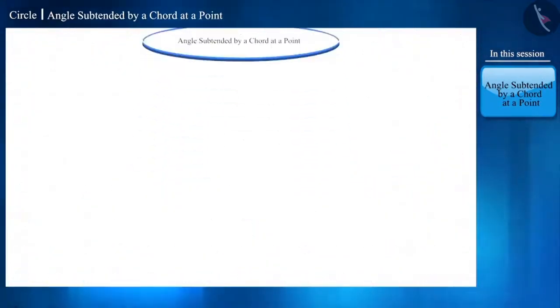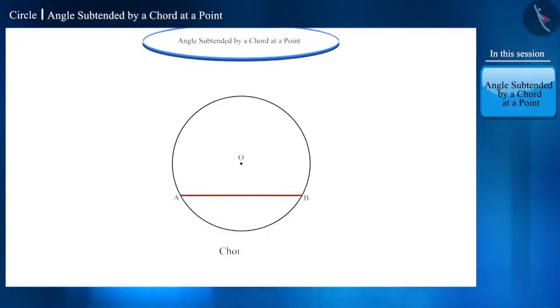Friends, consider a circle with center O. If you take two different points A and B and join them, then the line segment AB thus formed is called a chord of the circle, where AB is its minor arc and this is the major arc.